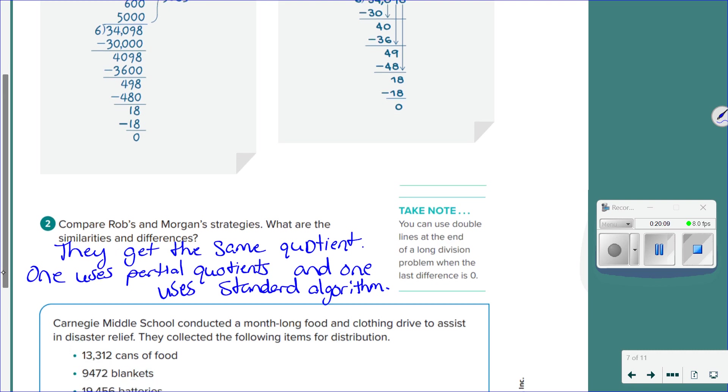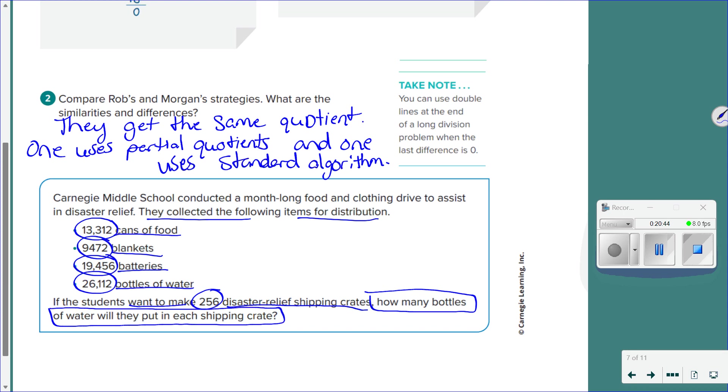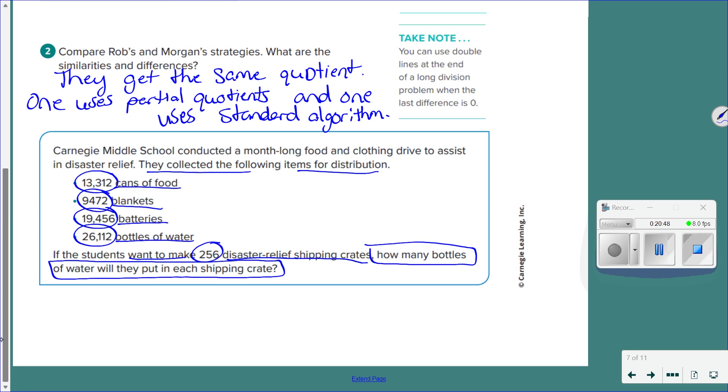Okay. Let's look at the next problem. It says Carnegie Middle conducted a month-long food and clothing drive to assist in disaster relief. They collected the following items for distribution. 13,312 cans of food, 9,472 blankets, 19,456 batteries, and 26,112 bottles of water. If the students want to make 256 disaster relief shipping crates, how many bottles of water will they put in each crate? So I want you to think about that and I want you to work out the problem and find the answer to figure out how many bottles of water they will put in each crate.